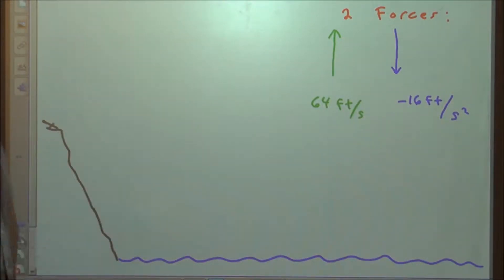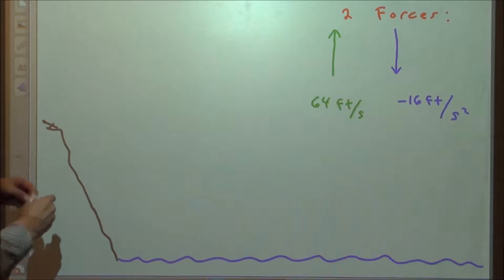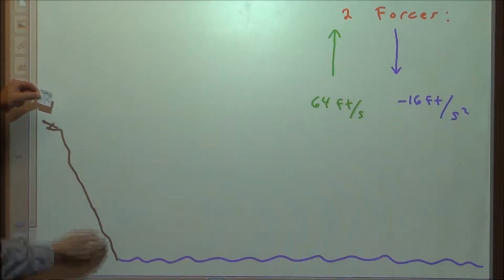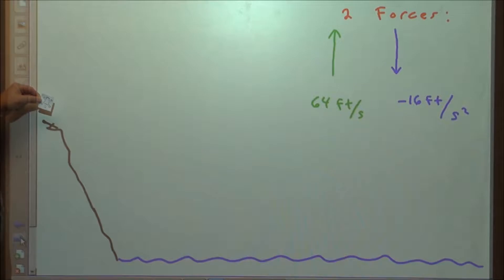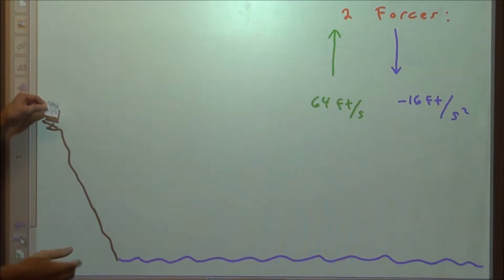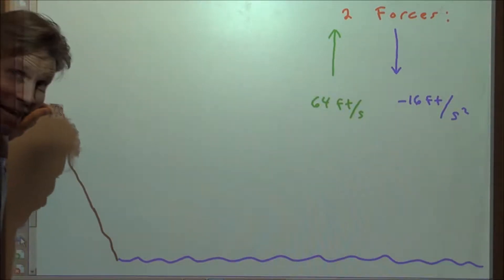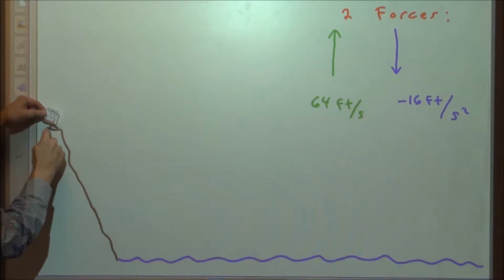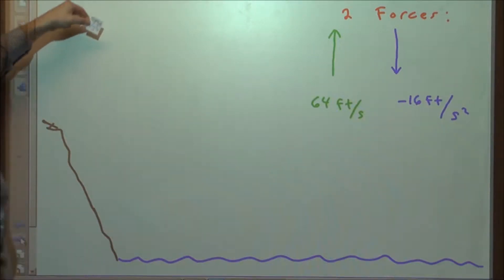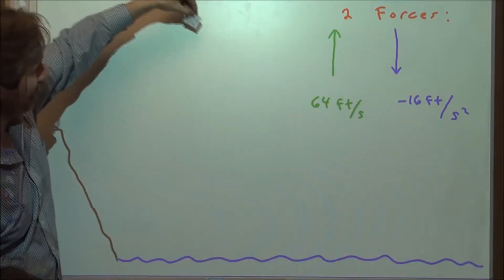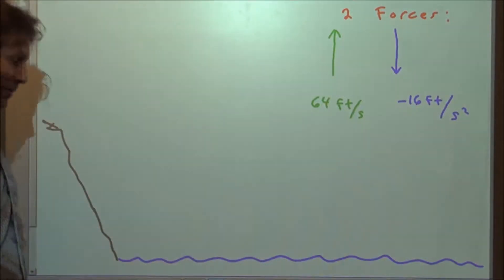Let's suppose we're going to launch an animal off a cliff — perhaps Fluffy the cat. We have a mechanism up on the cliff that's going to allow us to launch the cat in the air. Let's call it a catapult. So we're going to launch Fluffy. Fluffy's going up in the air, reaches a high point, and then splashes into the water.